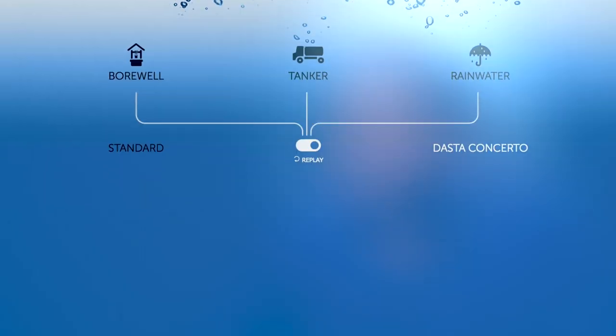In comparison, our system has three sources of water: borewell, tanker and harvested rainwater. Here is an interesting fact at Concerto: 30 minutes of average rainfall can yield two days of water consumption for the entire apartment building. The rainwater collection tank at DASTA Concerto can hold up to 100,000 liters of water, which is significantly larger than projects of similar size. Any excess rainwater is directed into 12 recharge beds that fill the underground water table.